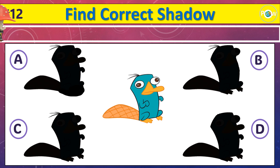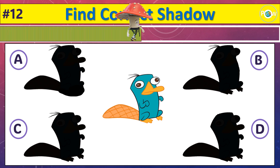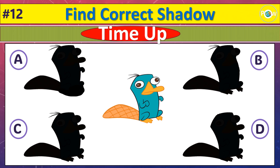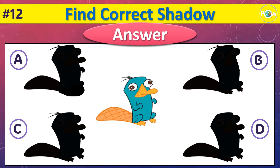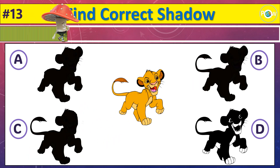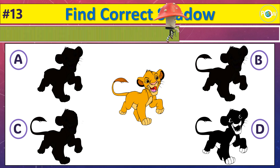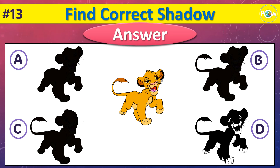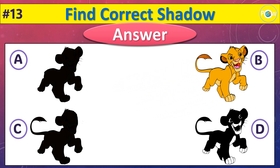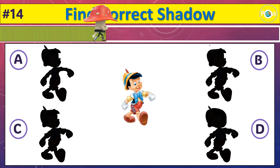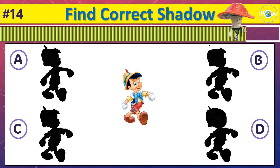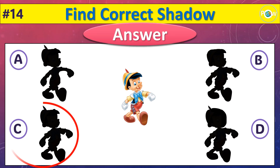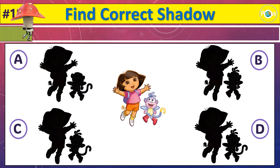Which is the correct shadow of this cartoon? Time up. And the correct shadow is C. Time up. And the correct shadow is B. Time up. And the correct shadow is C. Time up.